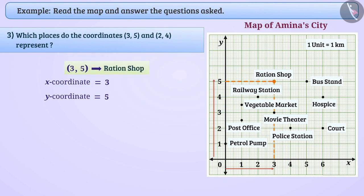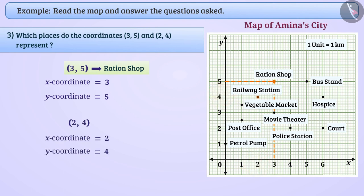Similarly, in coordinates (2, 4), 2 is the x-coordinate and 4 is the y-coordinate. Coordinates (2, 4) represent the railway station.